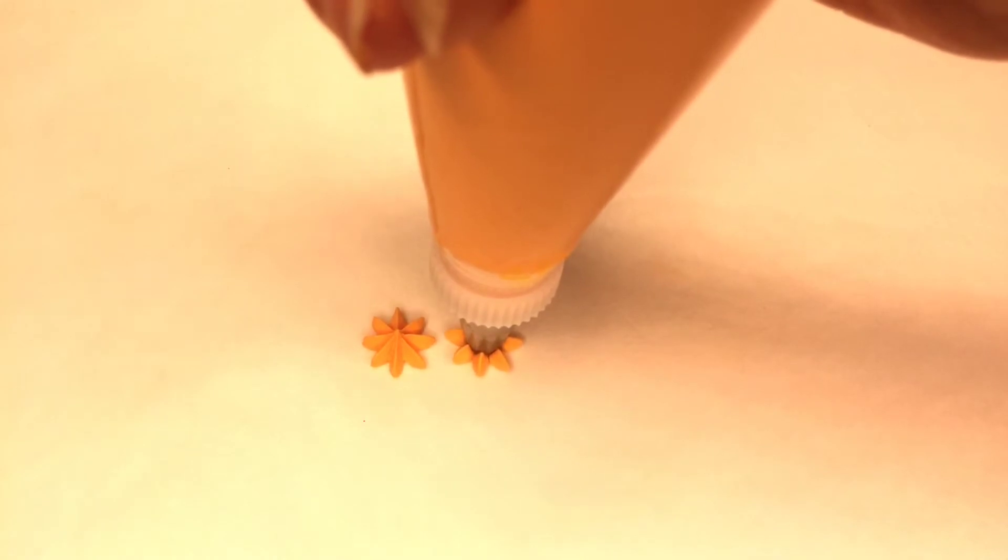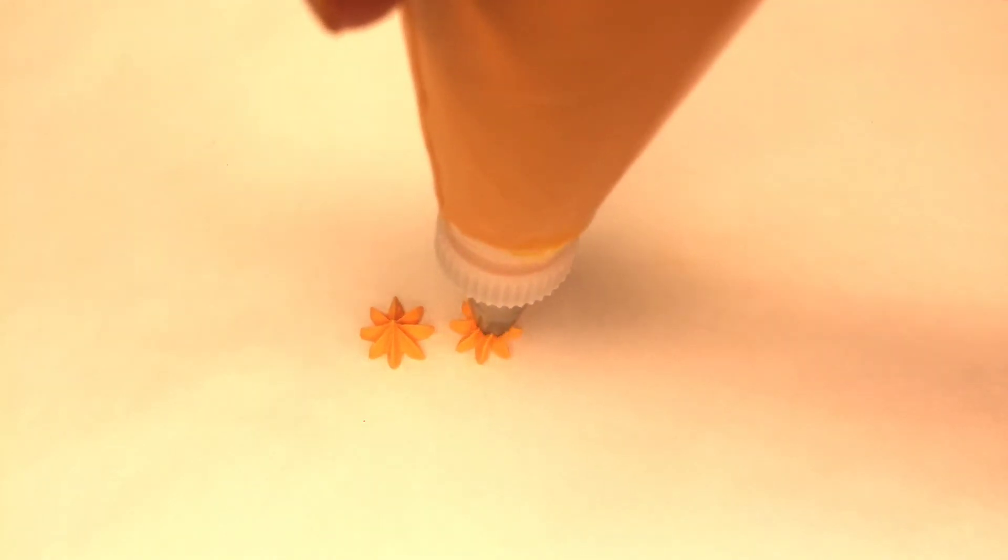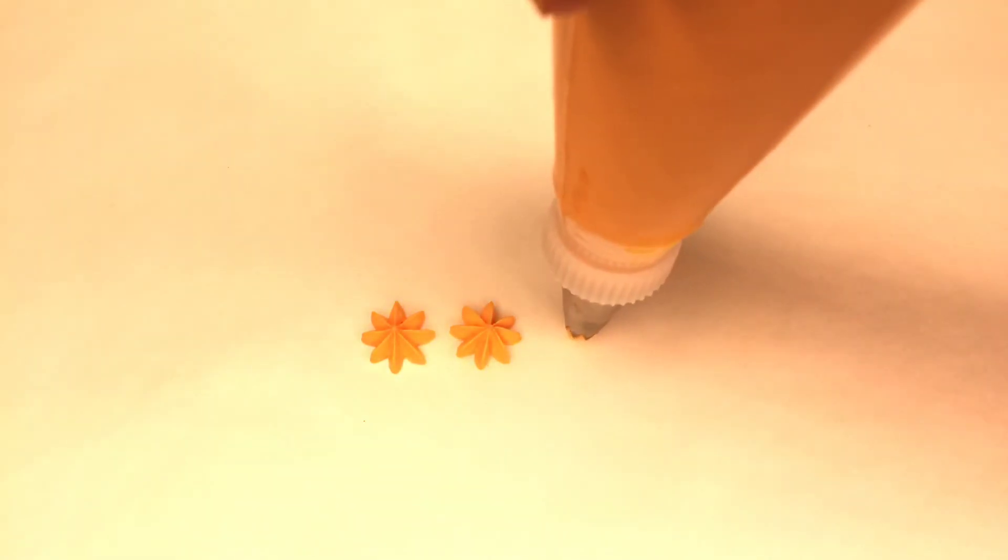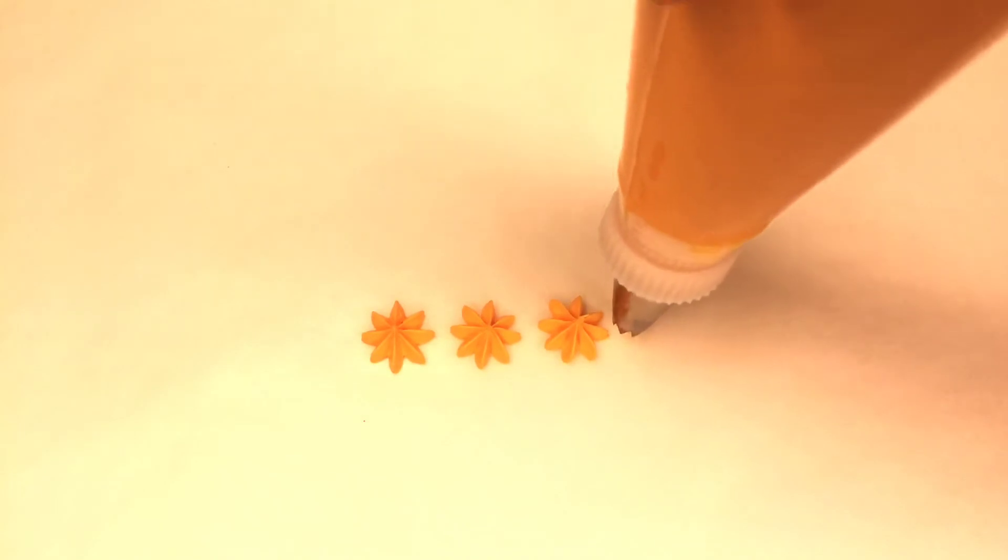I've seen people ice entire cakes with just this one technique and they make it a little different by changing the color. If you are going to give this technique a try, make sure that you pipe your stars very close to each other to avoid gaps.